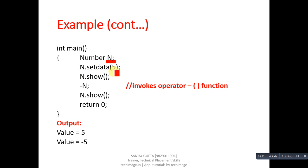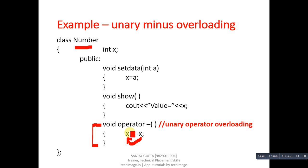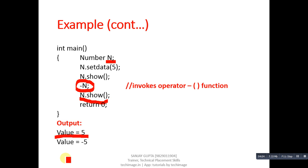Inside the main function, an object n is created. n.setData(5) assigns 5 into X, and n.show() prints 'value = 5'. Then -n calls the overloaded function — n is passed implicitly, and the minus operator changes X from 5 to -5, assigning it back. So n.show() prints -5, because the overloaded function converted 5 into -5.